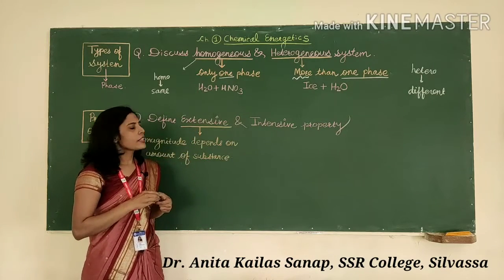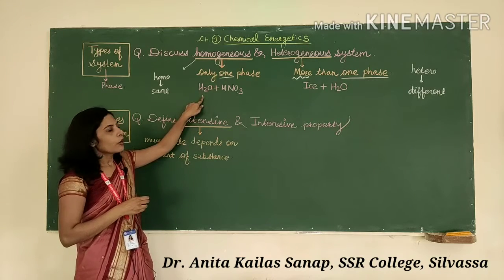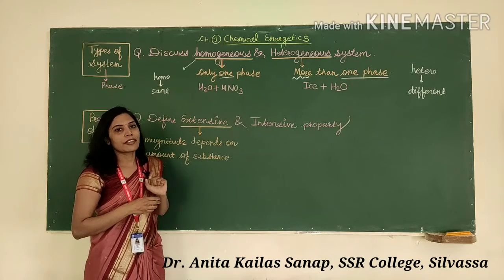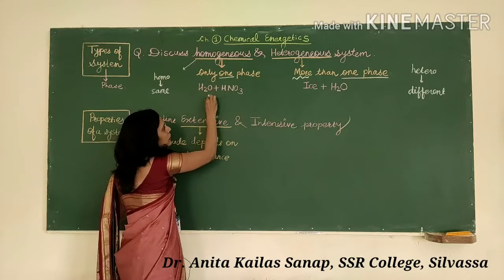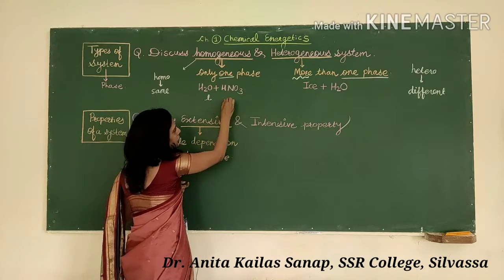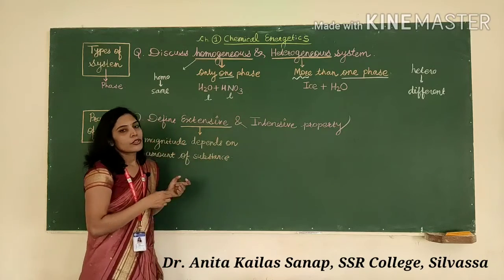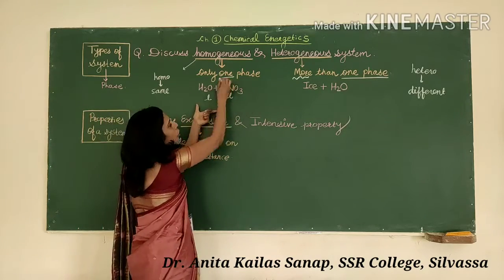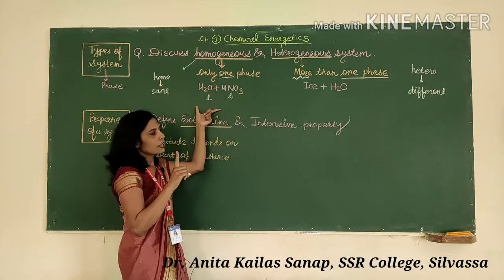Let us consider an example. Suppose we have a water and nitric acid mixture. Water is present in the liquid form and nitric acid is also in liquid form. So liquid plus liquid together will form only one phase — this is a homogeneous system.